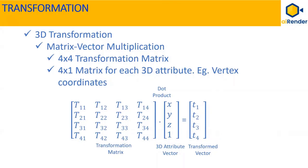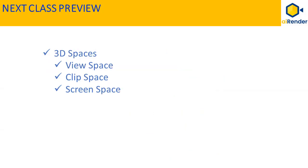The model matrix performs a translation, rotation, or scaling, or a combination of these, for all vertices of an object in a local space to transform it to the global world space. In the next class, we'll talk about view space, clip space, and screen space.